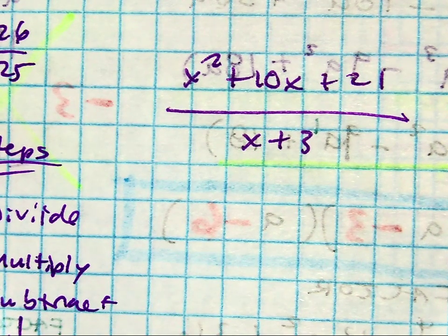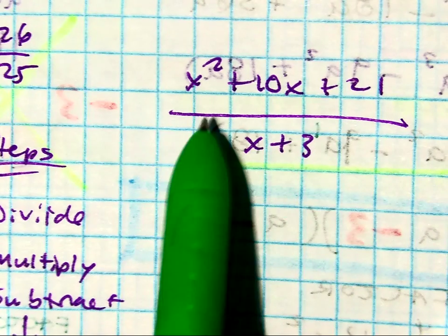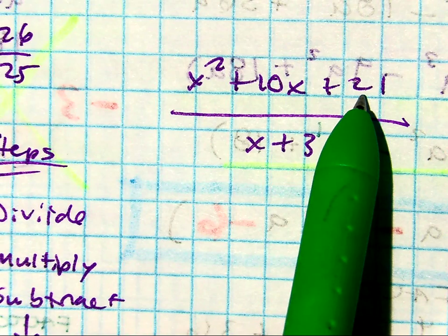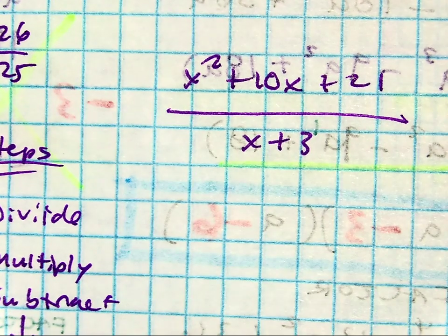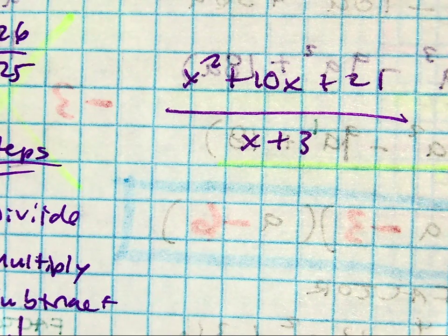Alright, so here I have a polynomial x squared plus 10x plus 21 over x plus 3. This line here tells us which math operation. It's division.